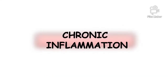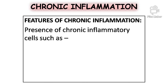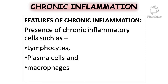Chronic inflammation is of longer duration and occurs after a delay. It occurs either after the causative agent of acute inflammation persists for a long time, or the stimulus is such that it induces chronic inflammation from the beginning. Features of chronic inflammation include the presence of chronic inflammatory cells such as lymphocytes, plasma cells, and macrophages.